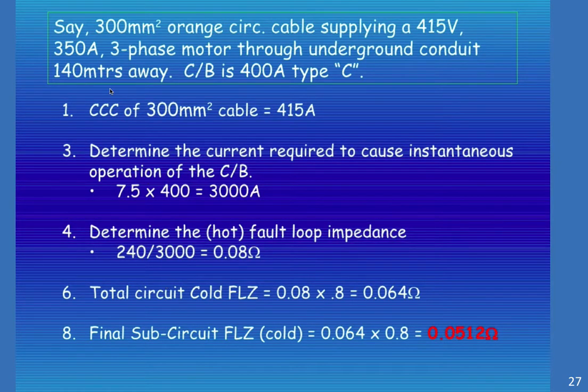Let's say we had 300mm² orange circular cable supplying a 415V, 350A, 3-phase motor through underground conduit 140 meters away, and the circuit breaker is 400A Type C. So we've got a cross sectional area of 300mm² cable at 415 volts.